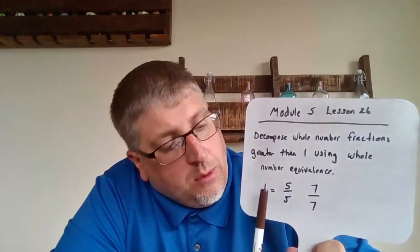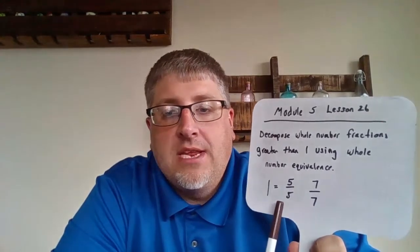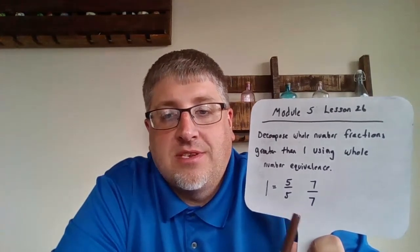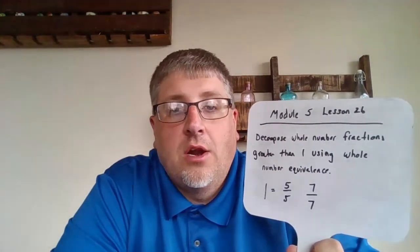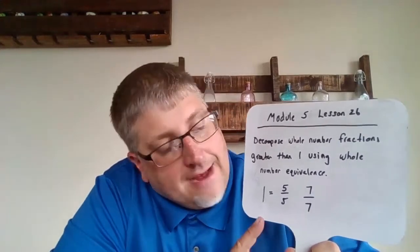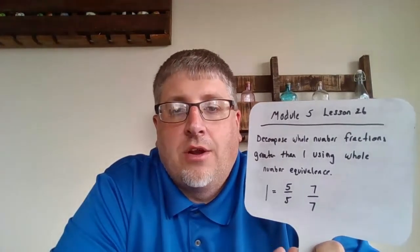So what I really want us to understand is when we get that whole number, 1 equals 5/5 or 1 equals 7/7. We're starting to understand what those whole number equivalents are. It's easy when we have that equivalence to 1 because we know the numerator and the denominator are the same.